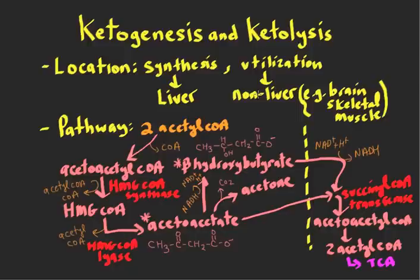The ketone bodies are sent off to peripheral tissues that have mitochondria and are used for energy. Only cells that have mitochondria can use ketones for energy, and the two important ones are the brain, neurons, and skeletal muscle, though there are some other places as well.